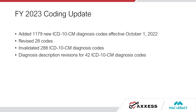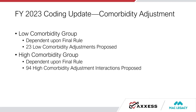Regarding comorbidity adjustments: for those who code Medicare PDGM clients, we have to consider the low and high comorbidity groups. Dependent on the final rule, we're expecting 23 low comorbidity adjustments proposed — up from 20 last year — and 94 high comorbidity adjustment interactions proposed, up from 87.